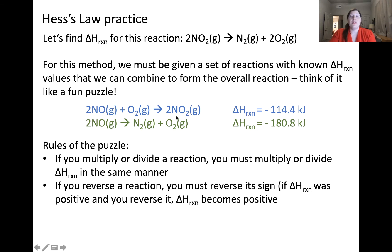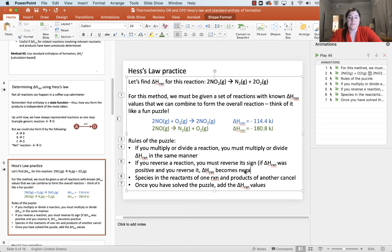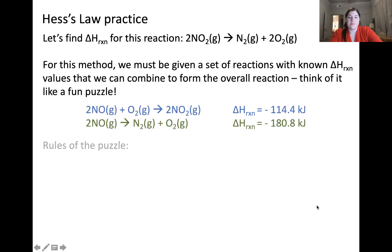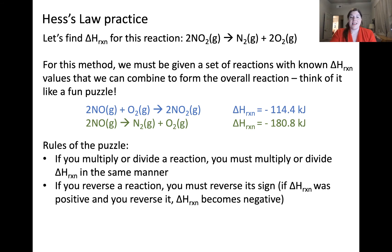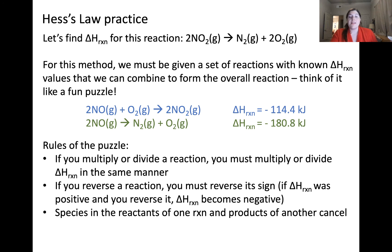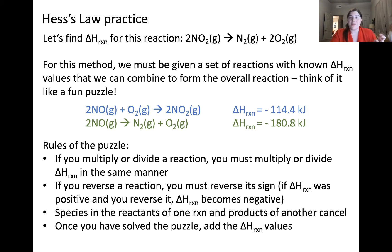The rules we need to follow are: if we multiply or divide a reaction to change the coefficients in front of the reactants and products, we need to do the same to the ΔH value for that reaction. If we reverse a reaction — making what is listed as the products into the reactants and vice versa — we must flip the sign. So if ΔH was positive and we reverse the reaction, ΔH would become negative. Species that are in the reactants of one reaction and the products of another will cancel. Once we've solved the puzzle, we add the ΔH values together to get the ΔH of the overall reaction.